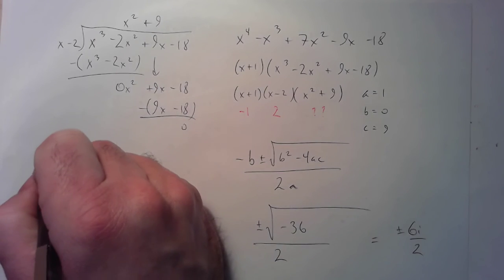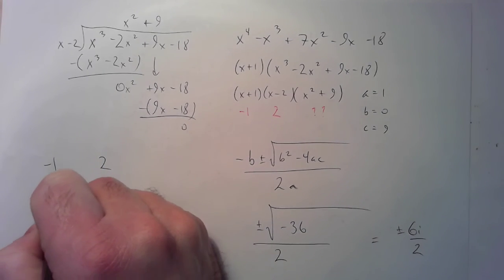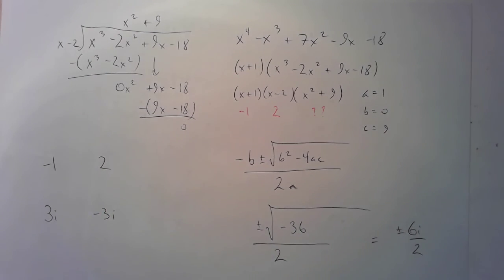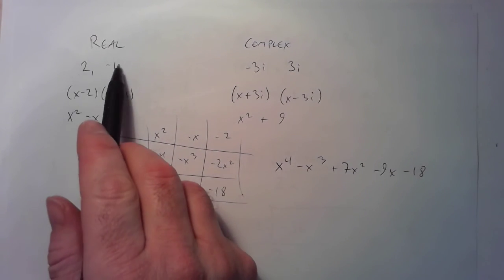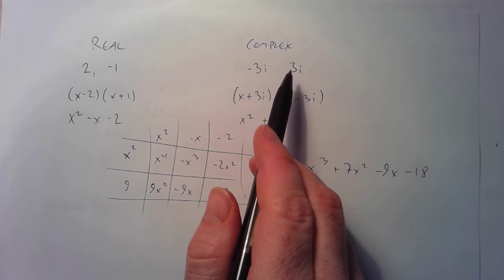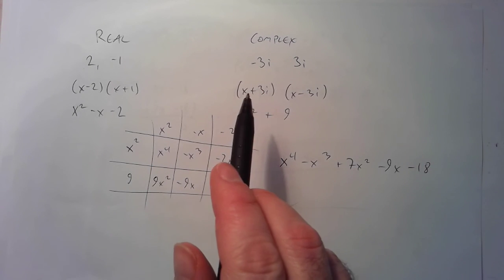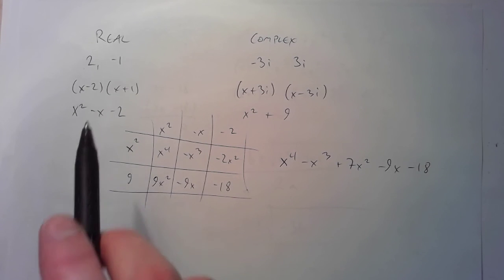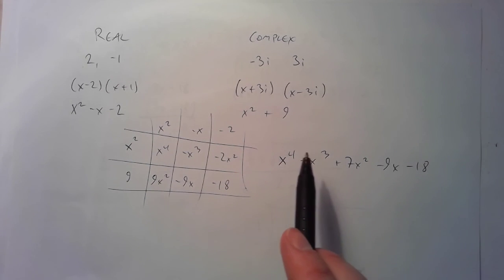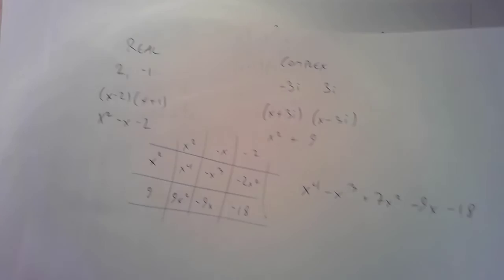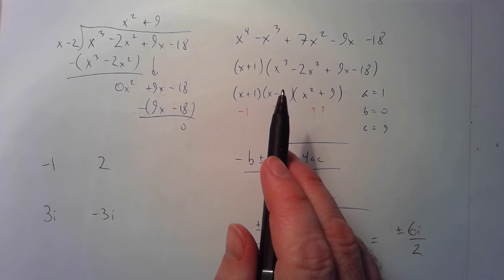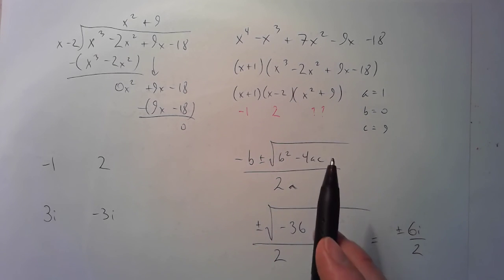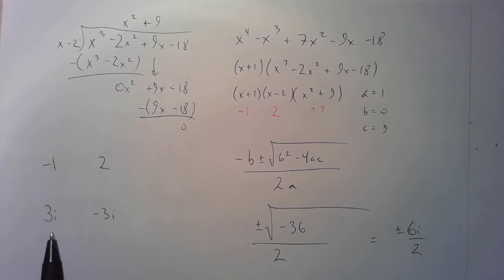So our zeros are negative 1, 2, 3i, and negative 3i, which takes us all the way back to the beginning where I wanted to make a polynomial with zeros 2, negative 1, negative 3i, and positive 3i. Those give the factors x minus 2, x plus 1, x plus 3i, and x minus 3i. When you FOIL these and put it all together, you get the fourth degree function, and under investigation you find it has zeros negative 1 and 2 from the linear factors, and using the quadratic formula on what's left, the remaining zeros 3i and negative 3i. That's how it's done.